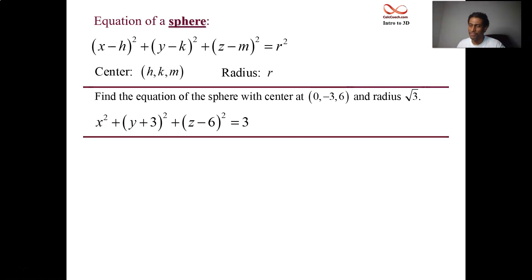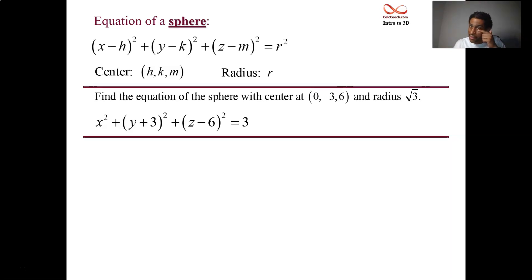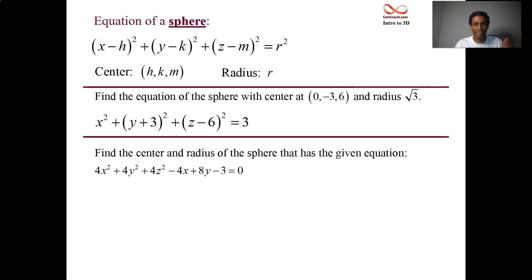Here's a harder question — well, not really hard, just a little bit of algebra. Let's say we have an equation and we want to backtrack and find the center and the radius. Not in standard form though — that'd be too easy. How about in a multiplied-out form: 4x² + 4y² + 4z² − 4x + 8y − 3 = 0.